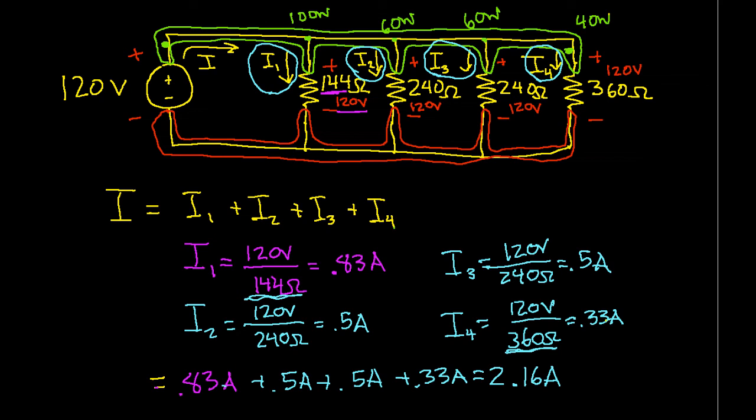Another common misconception is that current always takes the path of least resistance. If that were true, all of the current would flow through the 144 ohm resistor. Now, it's true that more current flows through the 144 ohm resistor, but not all of it will flow through the path of least resistance.